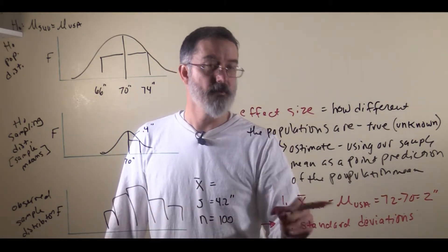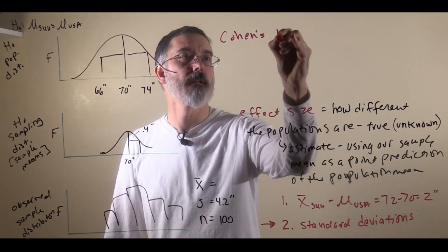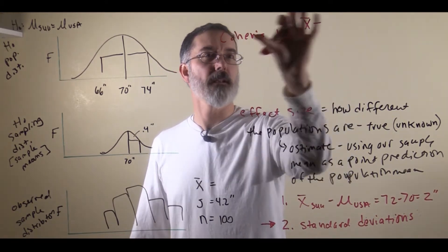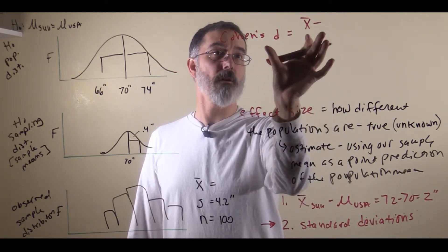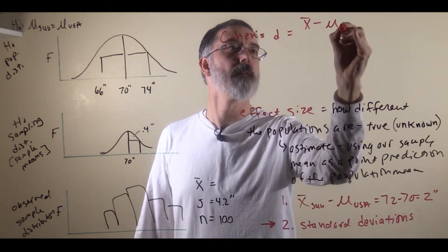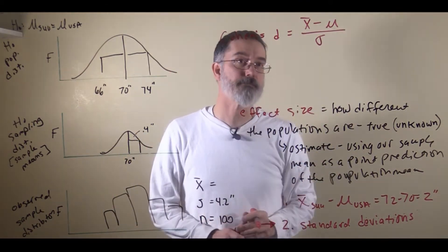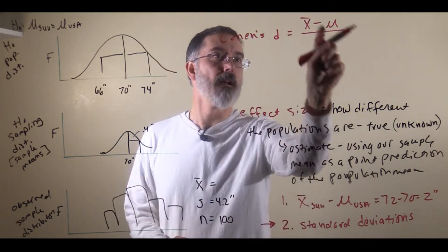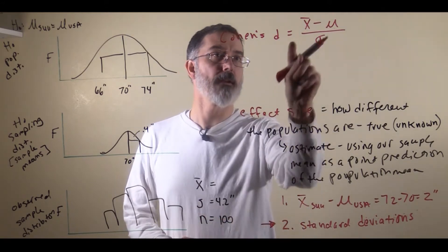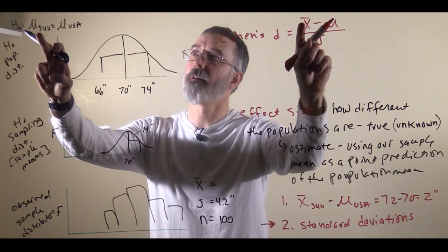To calculate effect size in units of standard deviations, you use a formula to calculate what is called Cohen's d. Cohen refers to Jacob Cohen. The formula puts in your sample mean, and you are calculating the z-score of your sample mean on this distribution — the mean of this distribution minus the population mean, divided by the standard deviation of this distribution. This tells us how many standard deviations our sample mean is away from the population mean, using our sample mean as our best guess at the population mean for SUU students.